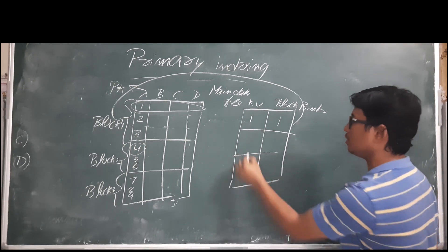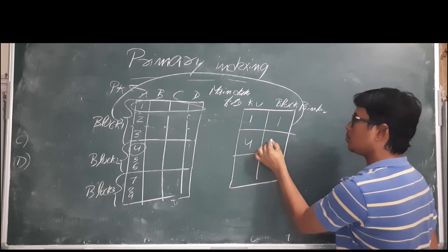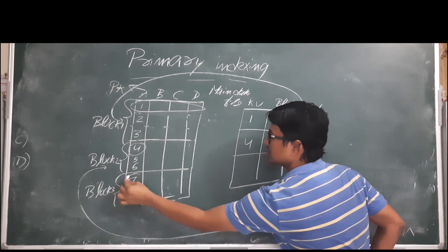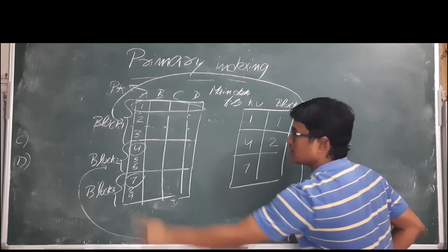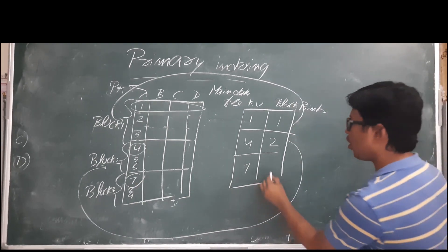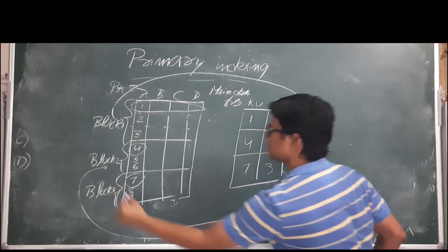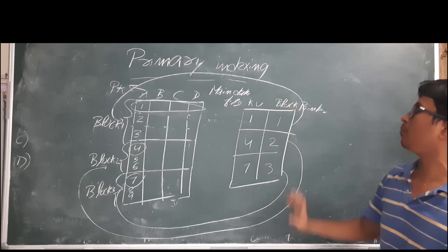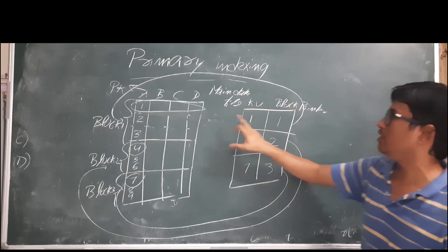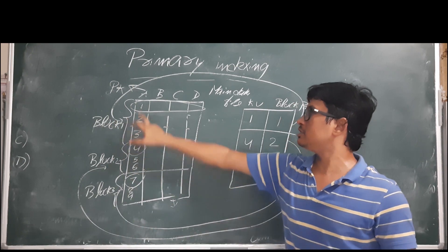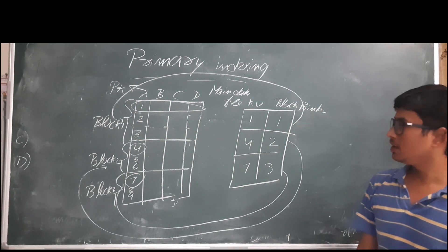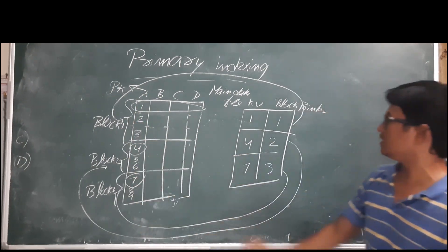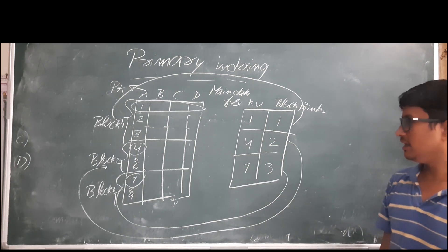For block two, the anchor is 4, so we write 4 and block pointer 2, pointing to block two. For block three, the first record is 7, so we write 7 and block pointer 3. We have now constructed the index file, which consists of key value and block pointer, with only the anchor record of each block. In the main file we have nine entries, but in the index file we have only three entries.